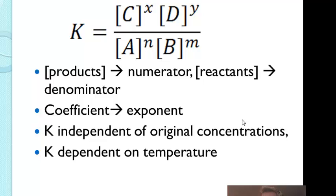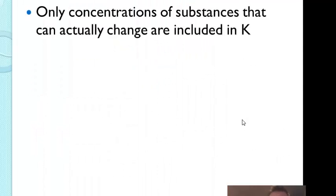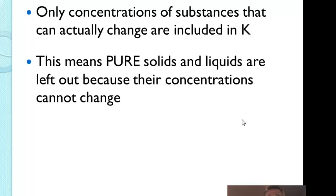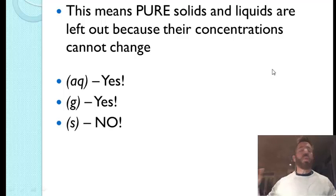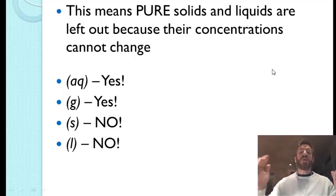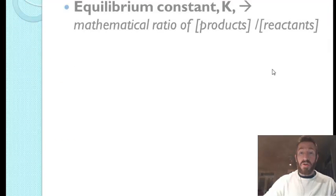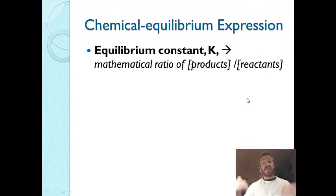In many problems, the temperature will be given, but you don't actually need to use it to solve the problem — it just sets the conditions. Only concentrations of substances that can actually change are included when we calculate K. Pure solids and liquids are left out because their concentrations don't change, though they may need to be present for the reaction to occur. To summarize: aqueous and gaseous substances are included in equilibrium expressions; solids and liquids are not included.